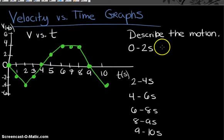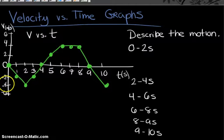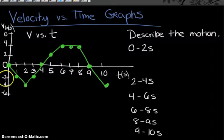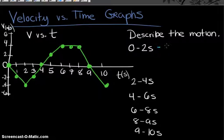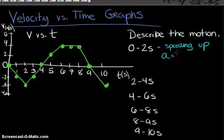From zero to two seconds, the initial velocity is zero, then negative two, then negative four. The negative values tell us about direction. The magnitude of the velocity — zero, then two, then four — tells us the object is speeding up. We can also calculate the acceleration using delta V over delta T.